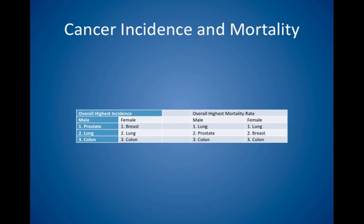Cancer incidence and mortality in the United States. In men, the highest overall incidence in order is prostate, lung, and colon cancer. In women, it is breast, lung, and colon cancer. The overall highest mortality rate in men, in order, is lung cancer, prostate cancer, colon cancer. And in women, lung cancer, breast cancer, colon cancer.